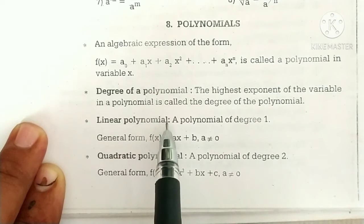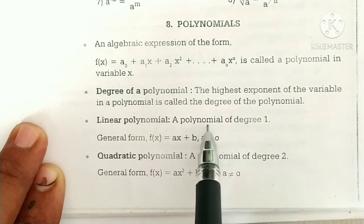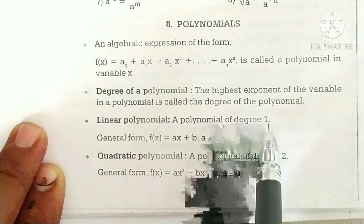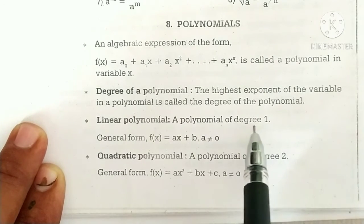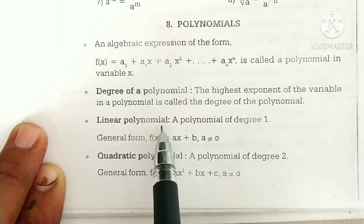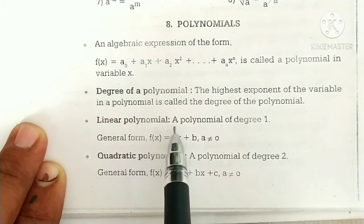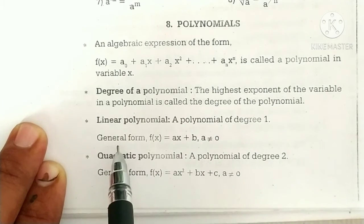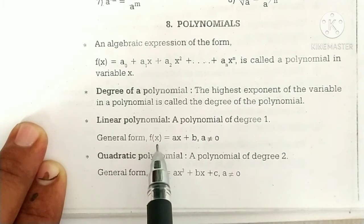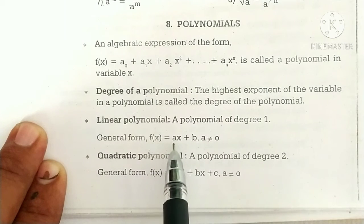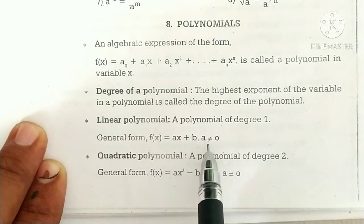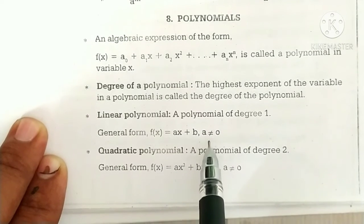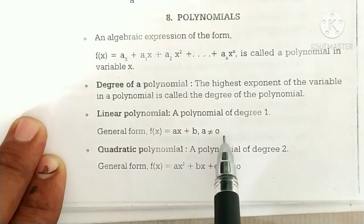Linear polynomial: a polynomial of degree 1 is said to be a linear polynomial. General form: f of x is equal to ax plus b, where a is not equal to 0.